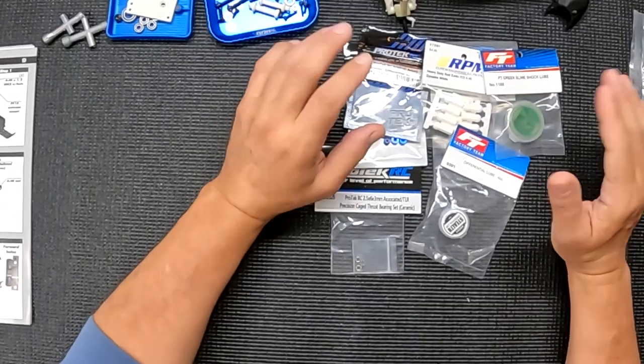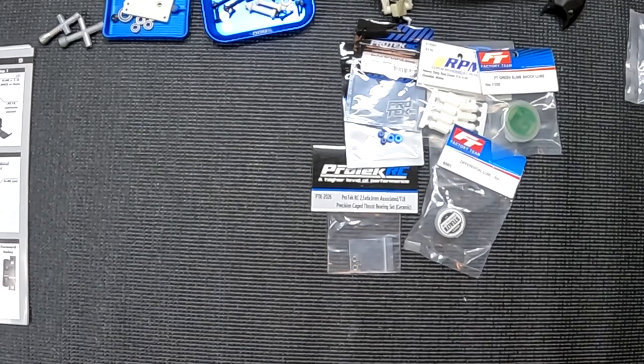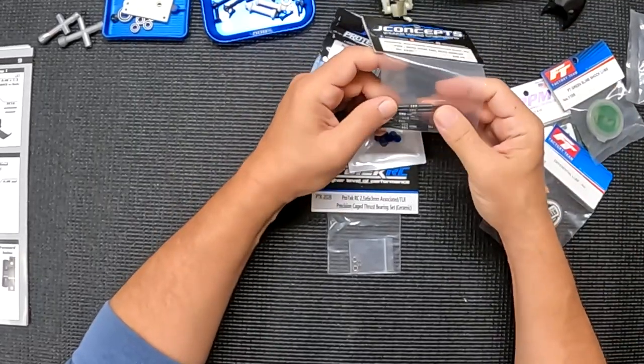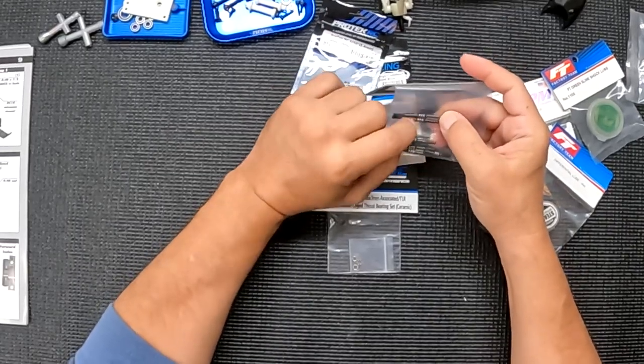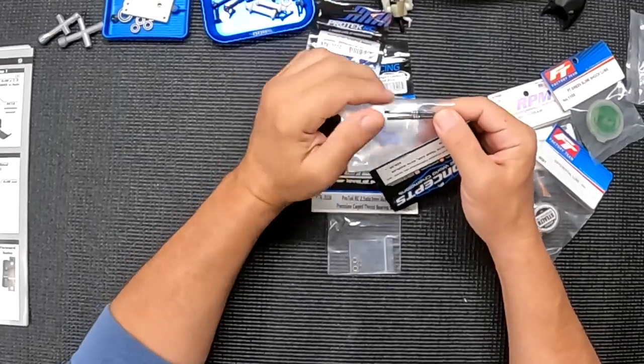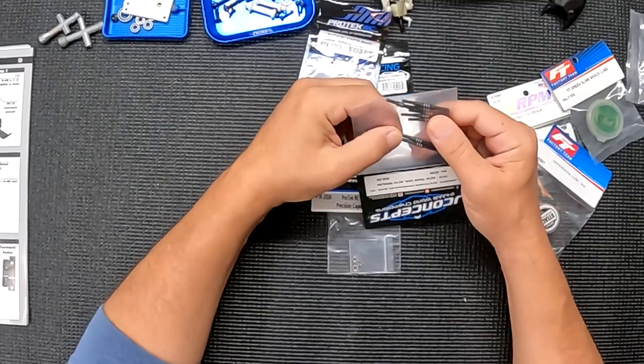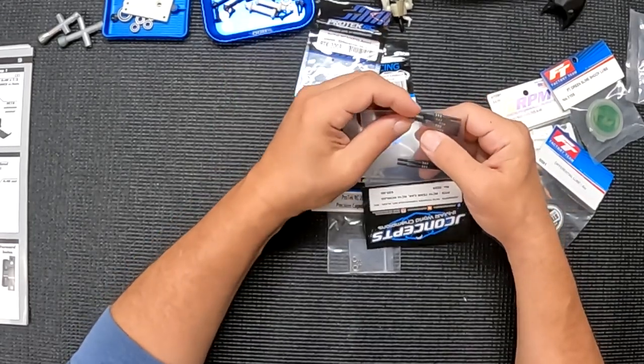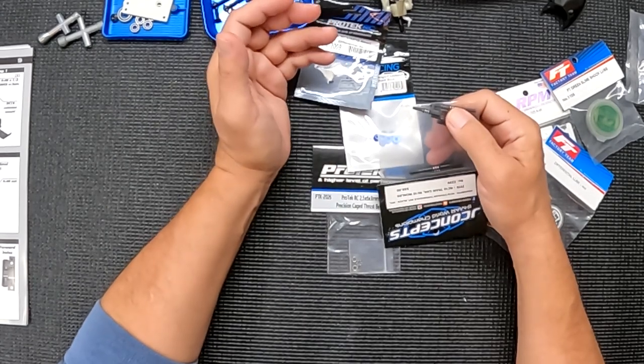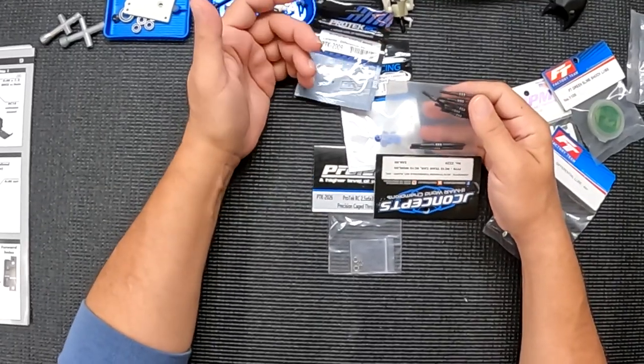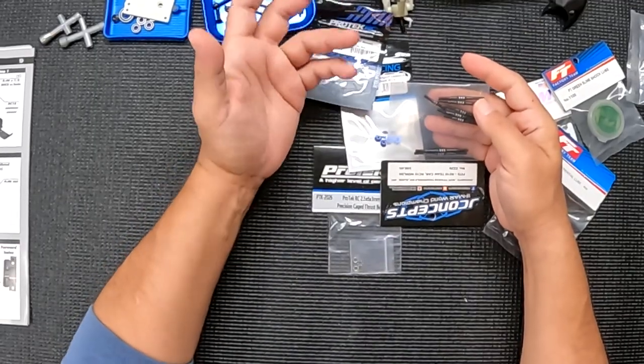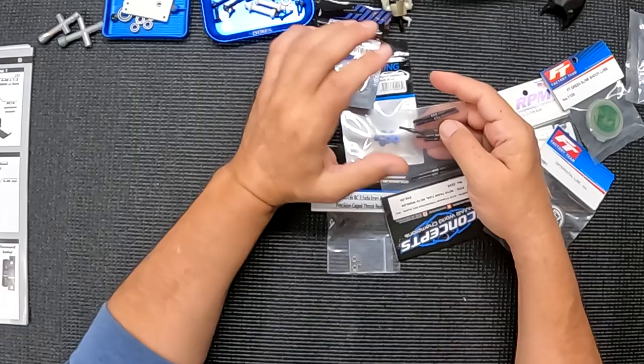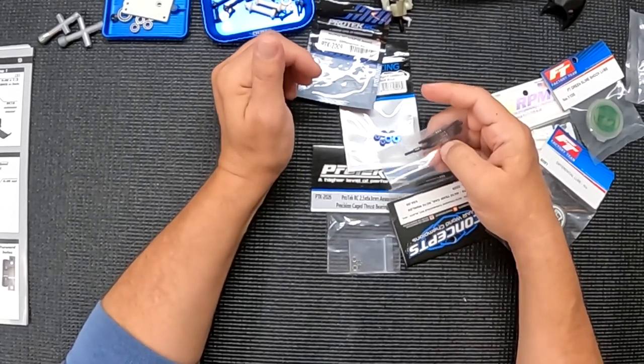I already talked about turnbuckles in a previous video: why the mark is there, which direction it goes, why they should point all in one direction. So I'm going to go ahead and build up all these turnbuckles with the ball cups. I'm not going to do that on camera because I already talked about it and showed the basic process. It's just boring for you guys to watch me build eight turnbuckles. Showing you how to build one turnbuckle is enough. I'm going to go ahead, turn the camera off, and put together all the turnbuckles for the car and come back at it.